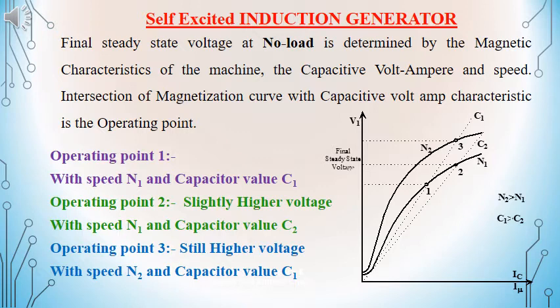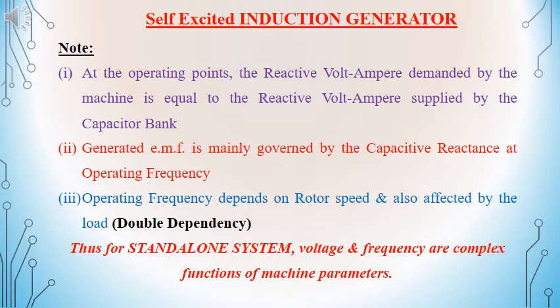Consider the operating point 1, which corresponds to speed N1 and capacitor value C1. For the same speed, if we consider the capacitance value to be C2, we will be getting a higher voltage given by operating point 2. For operating point 3, we have maintained the capacitance value as C1 but increased the operating speed to N2, and we obtain still a higher voltage as the output from the induction generator at steady state. At the operating points, the reactive volt-ampere demanded by the machine is equal to the reactive volt-ampere supplied by the capacitor bank.